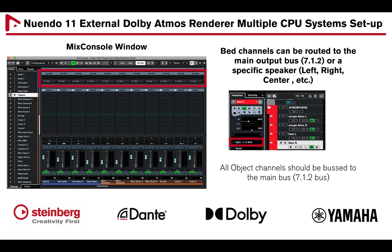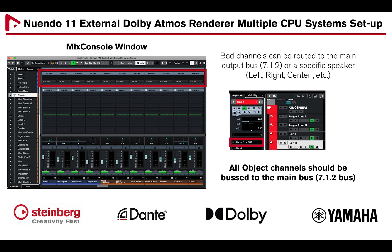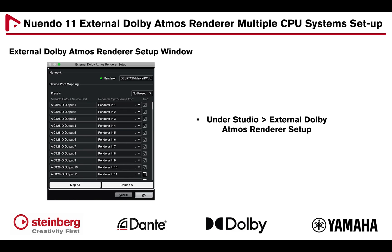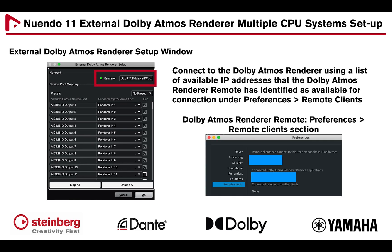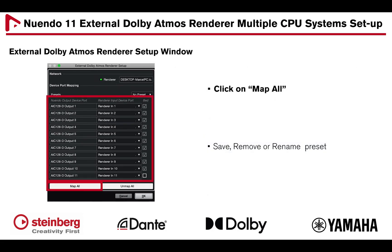All bed channels should be routed to the main output bus 7.1.2, or a specific speaker, and all object channels should be bussed to the main bus. In new Windows 11, under Studio, External Dolby Atmos Renderer Setup, connect to the Dolby Atmos Renderer using a list of available IP addresses identified under Preferences, Remote Clients, and click Map All to patch new Windows AIC 128D output ports to the Dolby Atmos Renderer input ports.